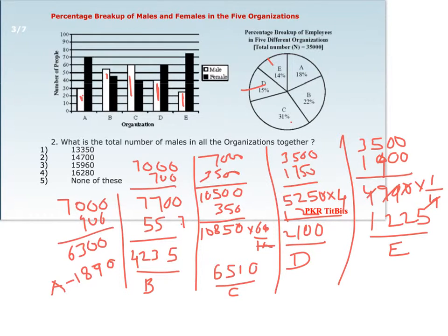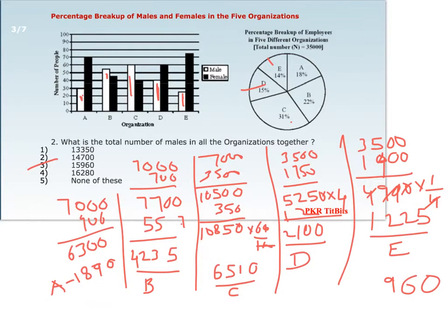Adding all males together: 1,890 + 4,235 + 6,510 + 2,100 + 1,225 = 19,960. Looking at the options, 19,960 is present, so option 3 is the correct answer.